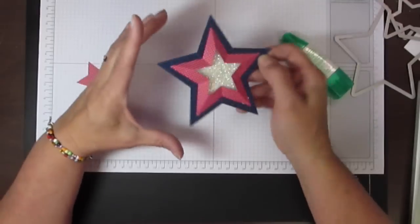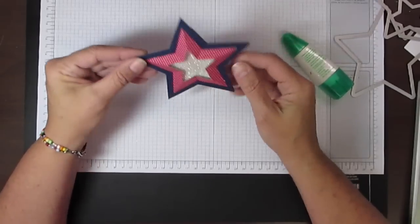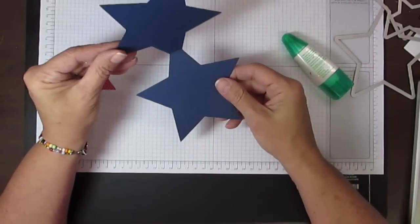You end up with great dimension to this. I don't know if you can see that, but that sparkle in the middle is awesome, and then the red star is lifted a little bit. For the inside, I go ahead with a piece of whisper white.